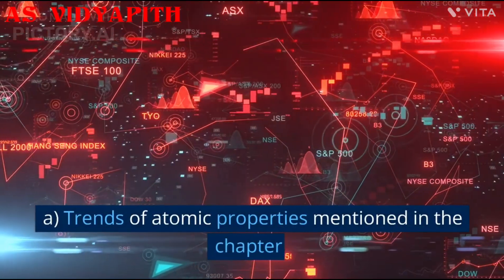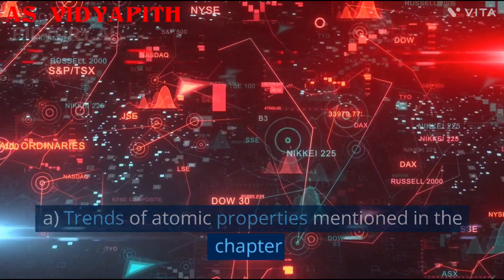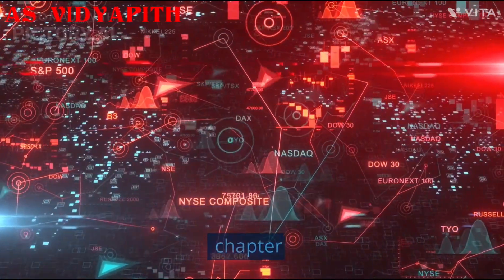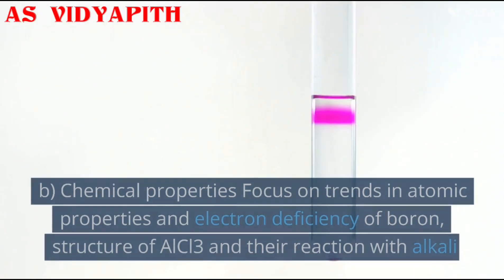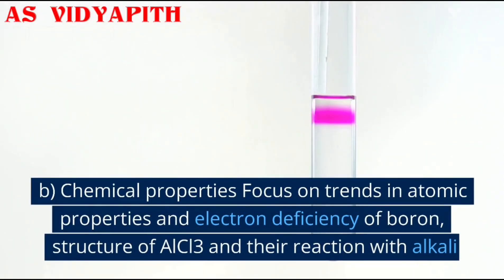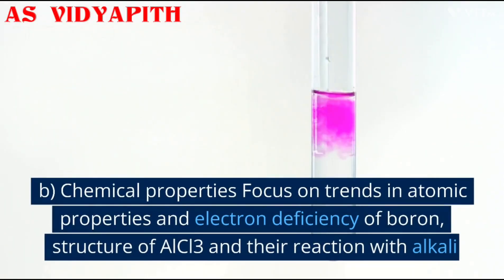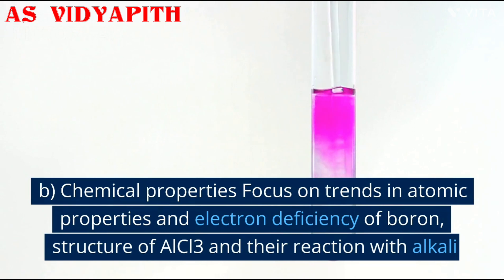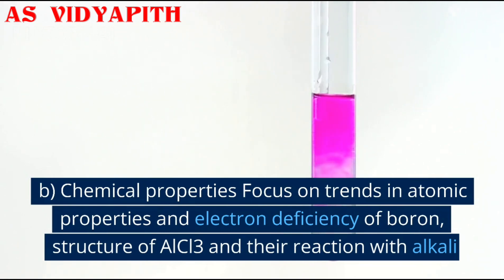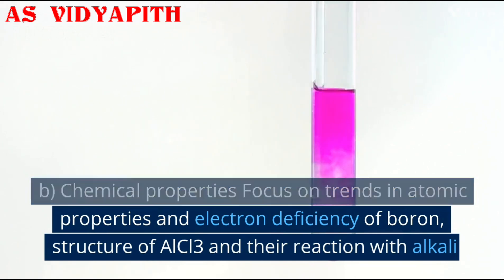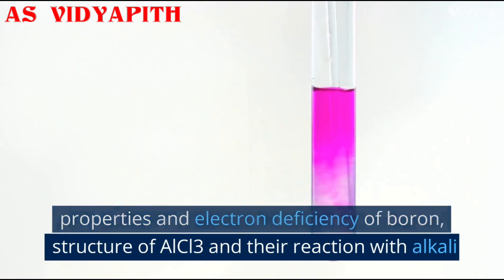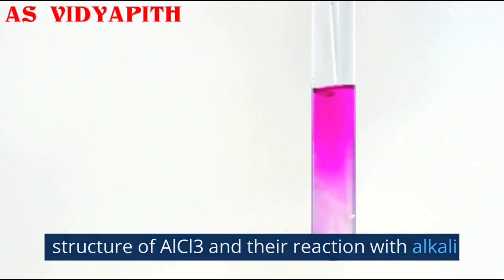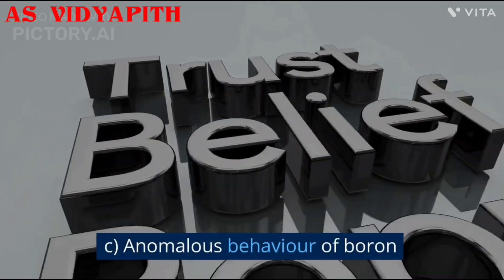a. Trends of Atomic Properties mentioned in the chapter. b. Chemical Properties — focus on trends in atomic properties and electron deficiency of Boron; Structure of BCl3 and their reaction with alkali.